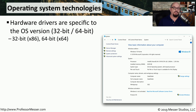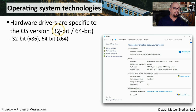Another important consideration when using 32-bit versus 64-bit operating systems is the type of drivers used. A driver is special software that allows your operating system to communicate with the hardware of your computer. If you're running a 32-bit operating system, you have to use 32-bit drivers. If you're using a 64-bit operating system, you have to use drivers specifically written for that 64-bit OS. You cannot use 32-bit drivers on a 64-bit operating system or vice versa.